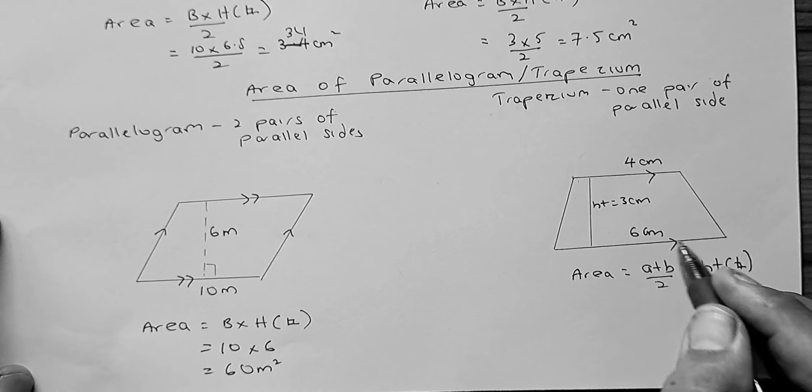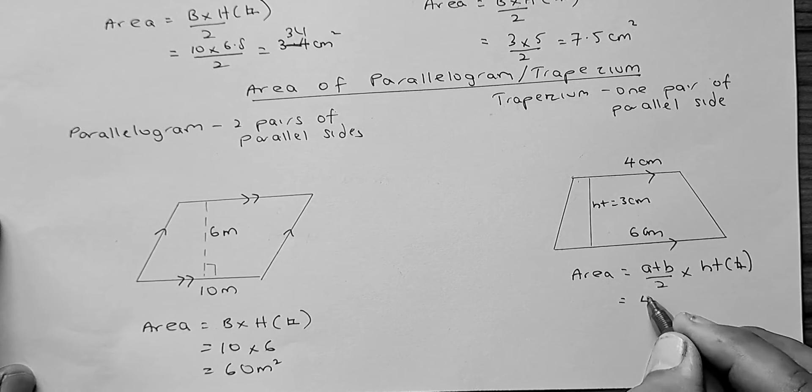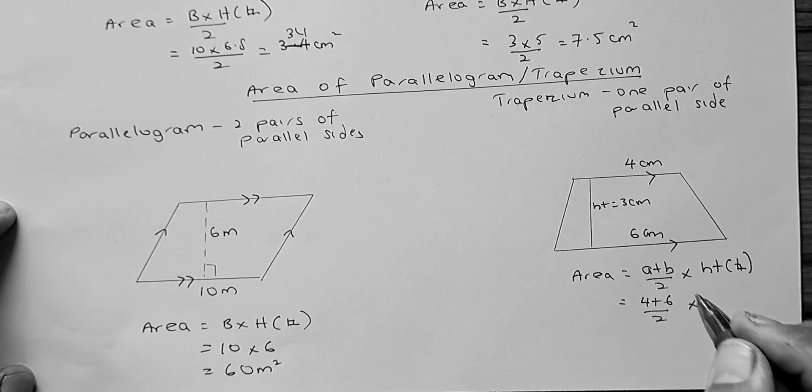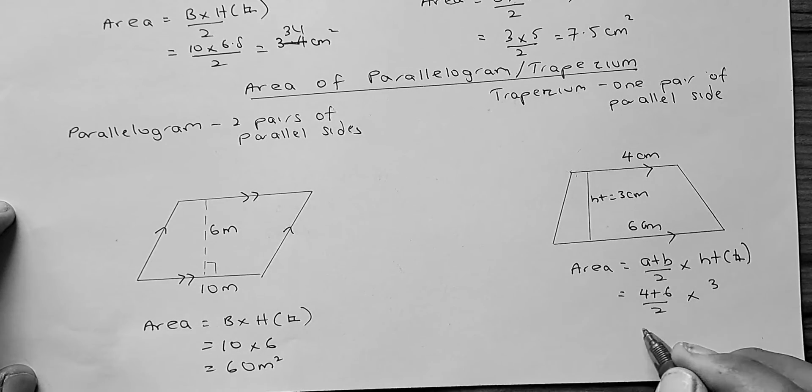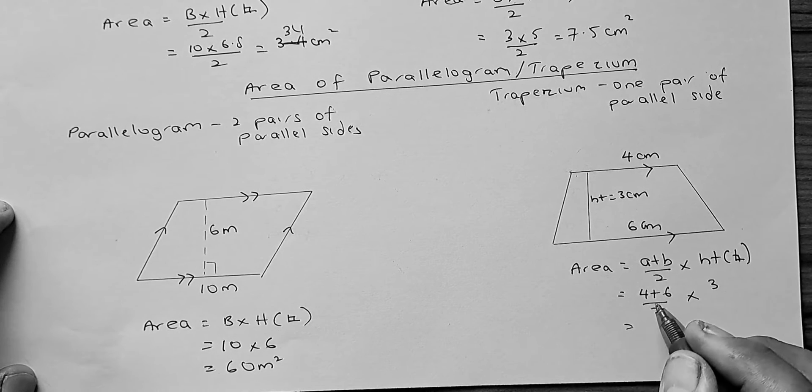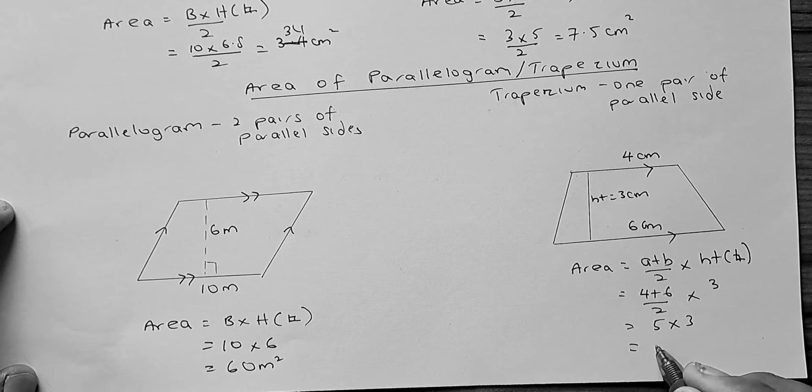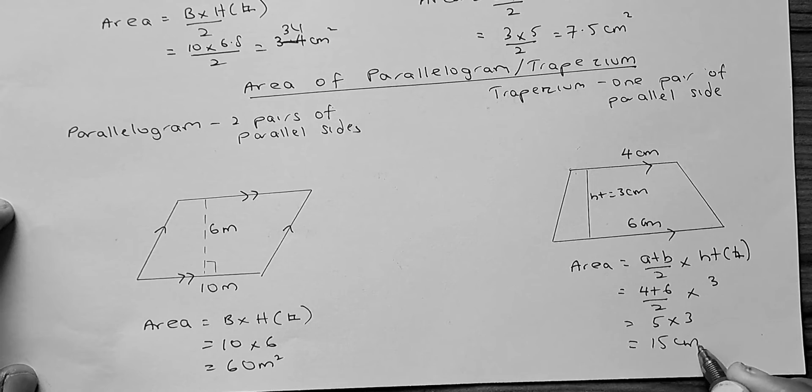So, in our case, the parallel sides are 4 and 6. So, what you do, you take 4 plus 6 divided by 2, the average of the two parallel sides times the height. The height is 3. So, what happens is that 4 plus 6 is 10 divided by 2 is going to be 5. 5 times 3 and the answer is going to be 15 cm squared.